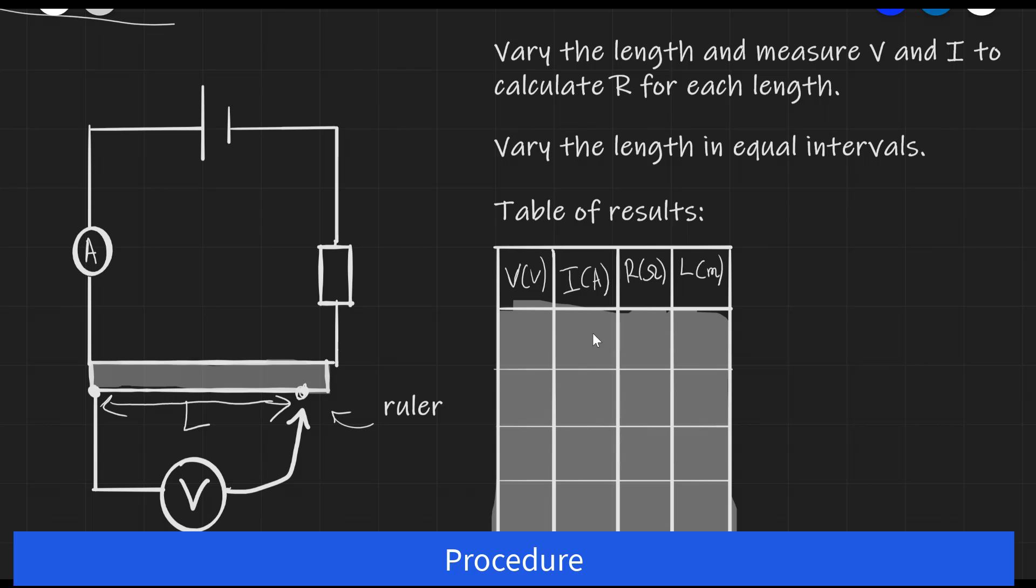Using this, we'll be able to calculate our resistance R using the fact that R is equal to V divided by I. So this column will be populated using R equals V divided by I, which is going to give us the result in ohms.